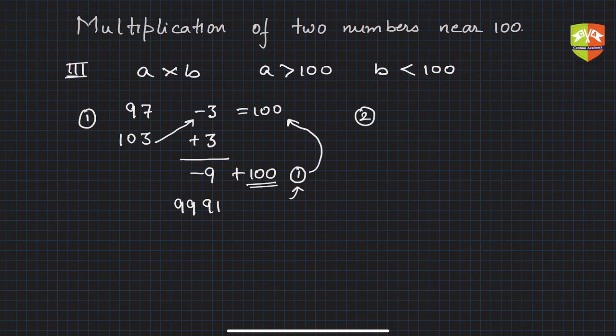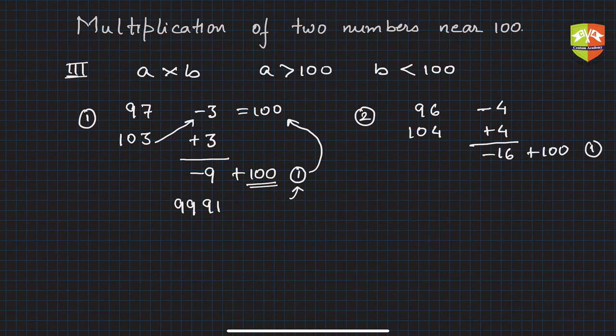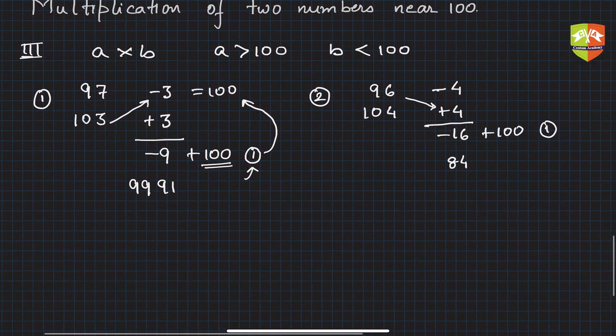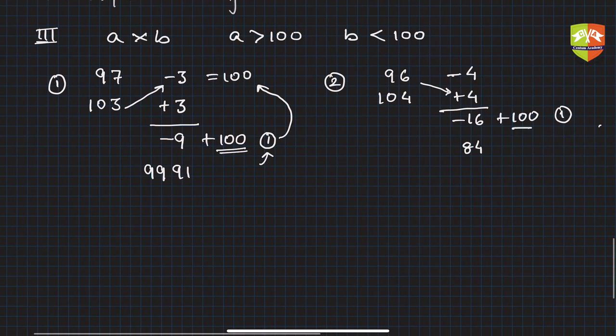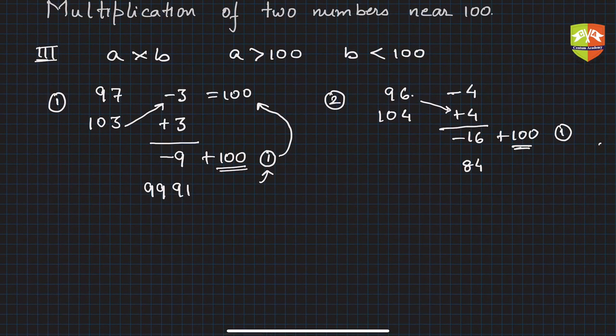Another example for clarity. Let's say 96 and 104. Here you'll get minus 4 and plus 4. Plus 4 times minus 4 is minus 16. Add 100 to make it a positive two-digit number—write 1 here. Add 100, you get 84. Now 96 plus 4 is 100, but since you borrowed 100, remove that 1: you get 9984.